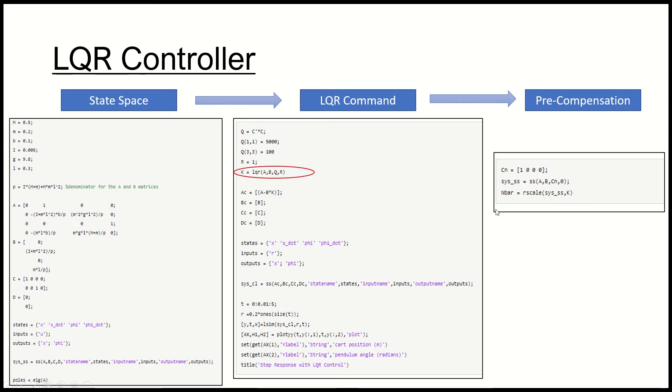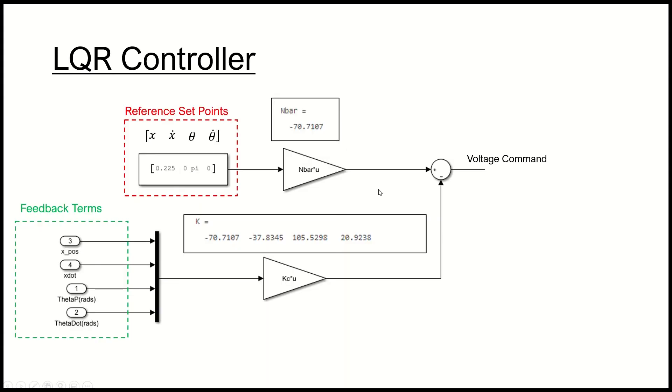You also then need to, as I mentioned previously, compute this n bar which is just a scale pre-compensator to put at the reference. Once you do that you'll end up with this sort of control structure. You'll see we've got the four state feedback terms and that is matrix multiplied by the key gain matrix, and this is the key gain matrix that we've got from mathworks website.